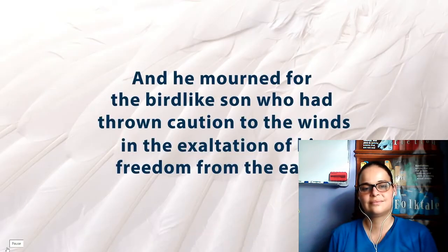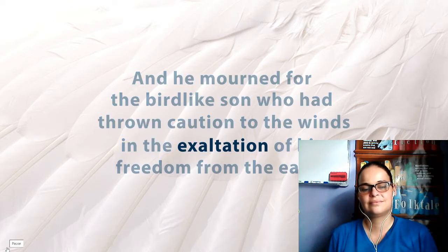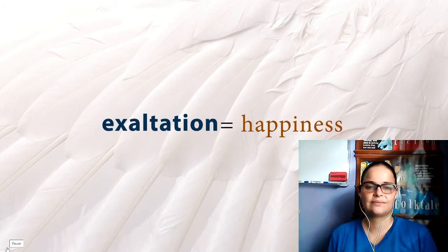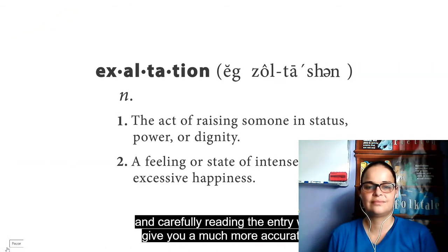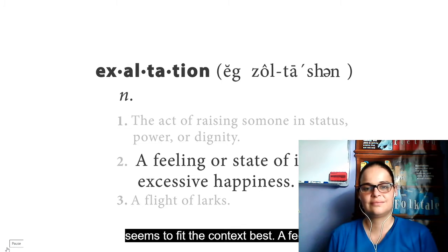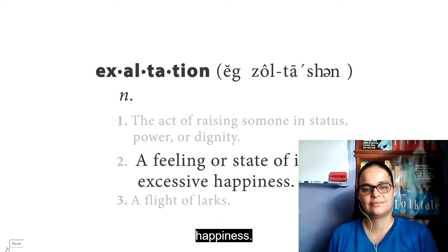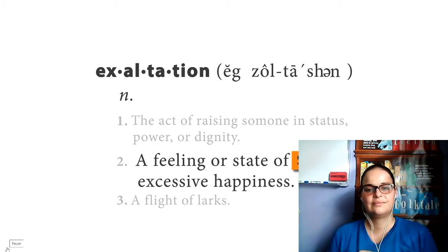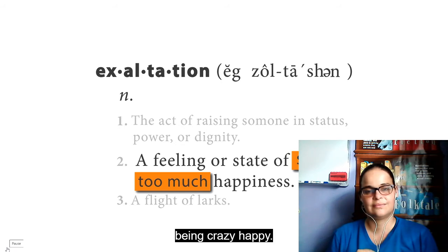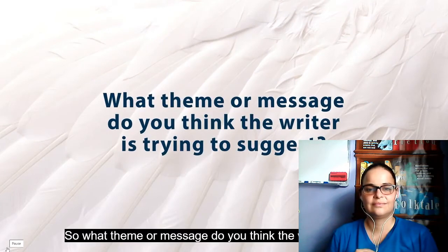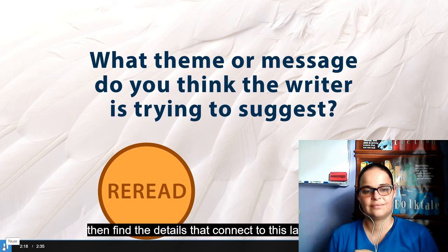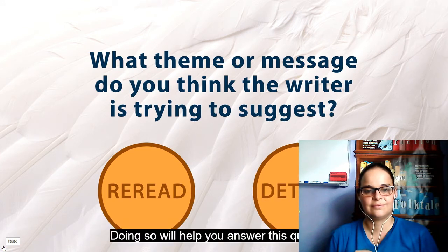Now look back at the sentence again. The writer uses a pretty rare word, exaltation, to describe Icarus's actions. If you guessed at the word's meaning and came up with happiness, you were pretty close. But looking it up in a dictionary and carefully reading the entry will give you a much more accurate meaning. This second meaning seems to fit the context best: a feeling or state of intense, often excessive happiness. Intense means strong, and excessive means too much. So exaltation is the feeling of being way too happy about something — like being crazy happy. So what theme or message do you think the writer is trying to suggest? Scan back through the story and reread the parts that describe Icarus's actions, then find the details that connect to this last sentence. Doing so will help you answer this question: why might throwing caution to the winds be a bad thing?